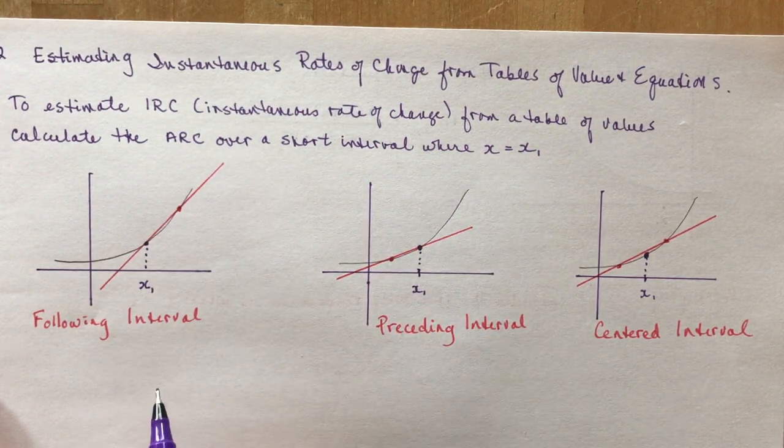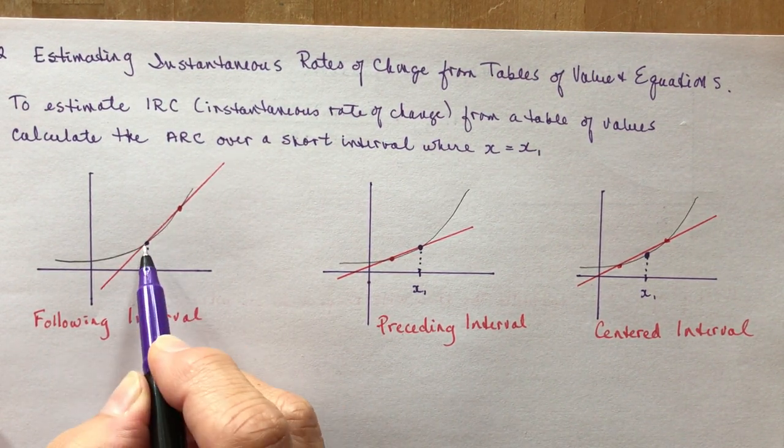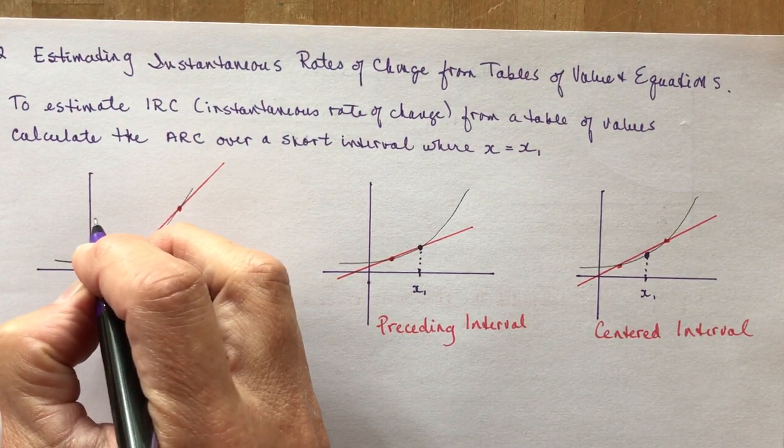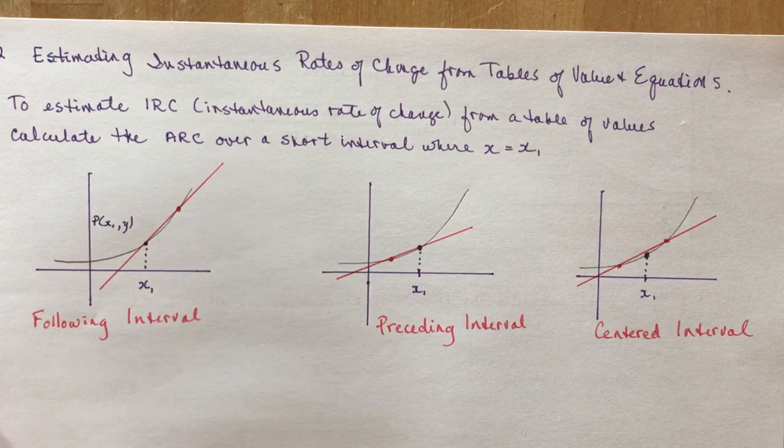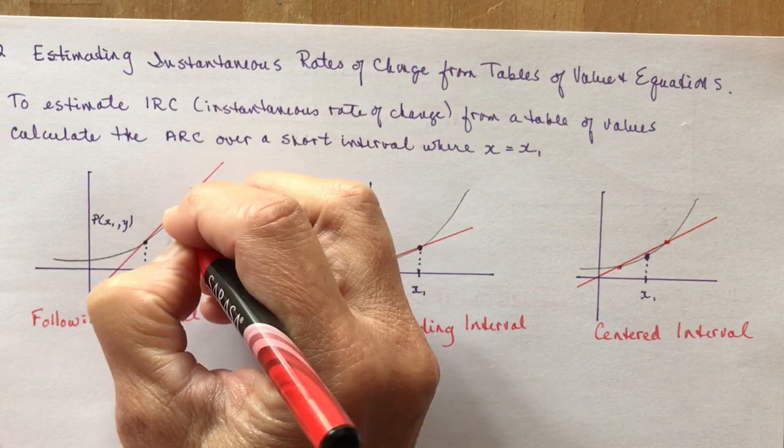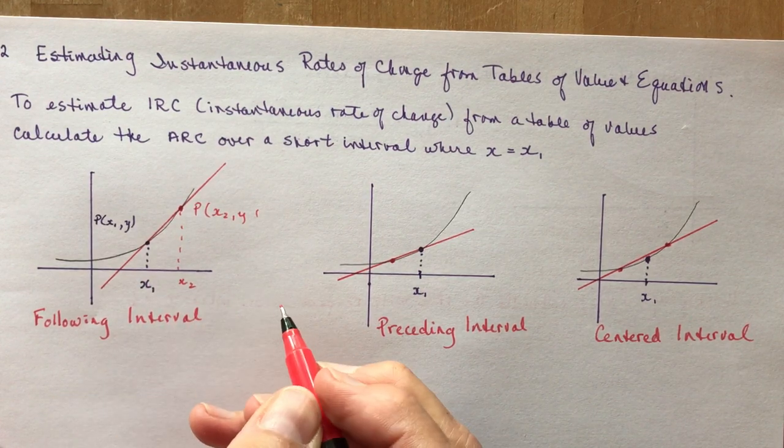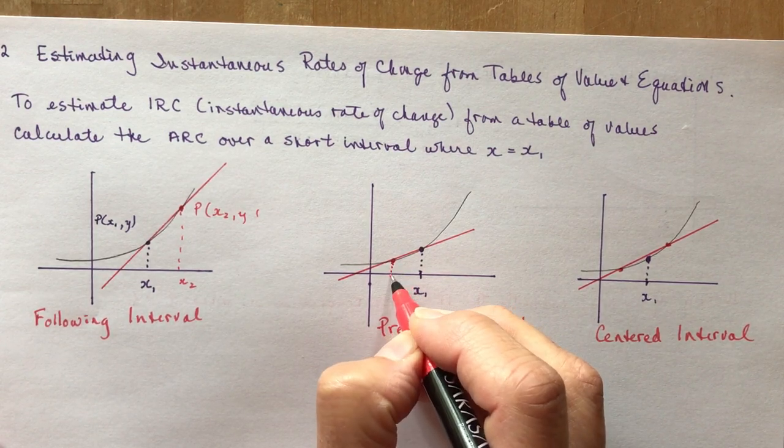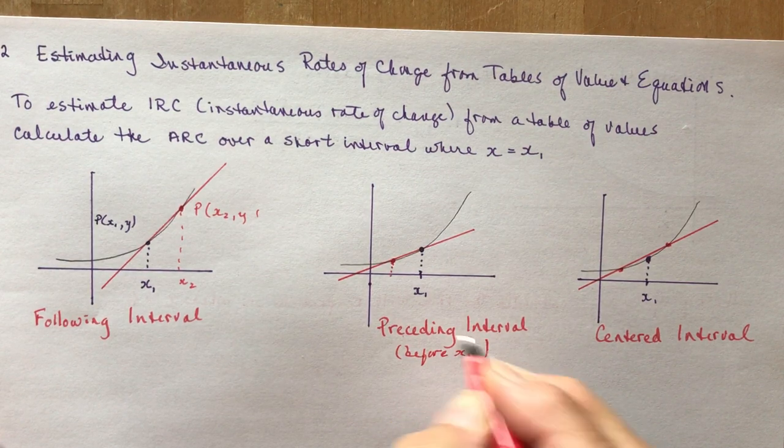We're going to estimate it over a short interval where x equals x1. There's three different types of intervals. The following intervals—so here's my point, this would be px1, this would be x1y, and this would be x2—that's a following interval because it comes after it. The preceding interval means I use the point before, so this means before x1, following after, preceding before it.